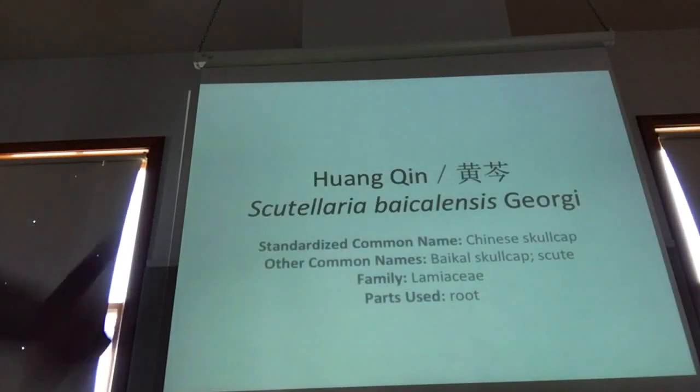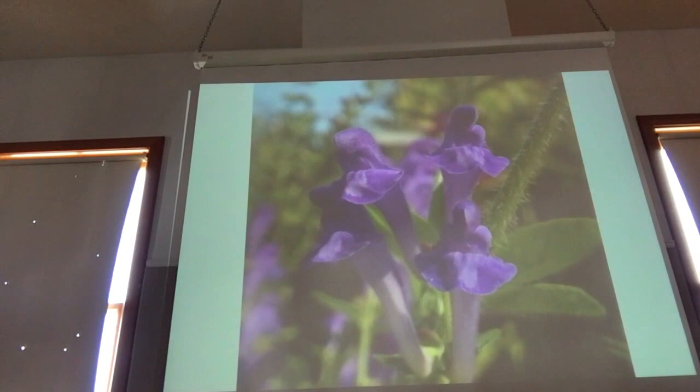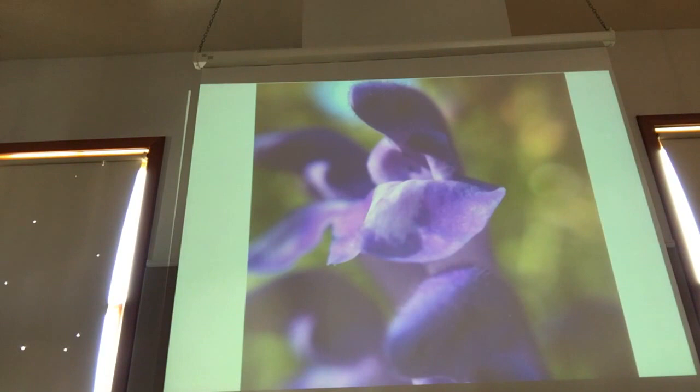The first thing we're going to talk about is Huangqin, Scutellaria baicalensis. Huangqin is a Lamiaceae family member. We use the dried root in Chinese medicine. It's beautiful in flower — these are my pictures. Huangqin first appears in the Shenong Ben Cao Jing, the earliest extant Materia Medica in Chinese medicine, or a copy of a copy preserved in another book.